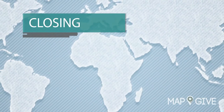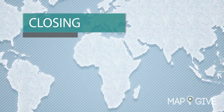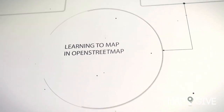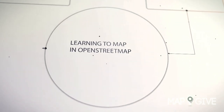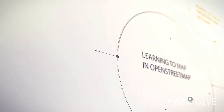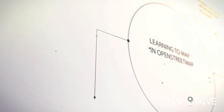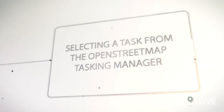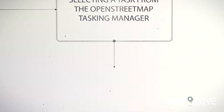Closing. That's it — that's all it takes to start mapping in OpenStreetMap! Once you hit Save, your edits are live and part of the OpenStreetMap database, immediately available to anyone in the world. Once you feel confident mapping, continue to the next video to learn how to select a task from the OpenStreetMap Tasking Manager.